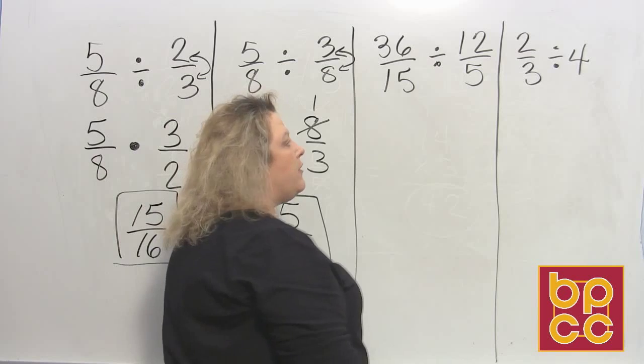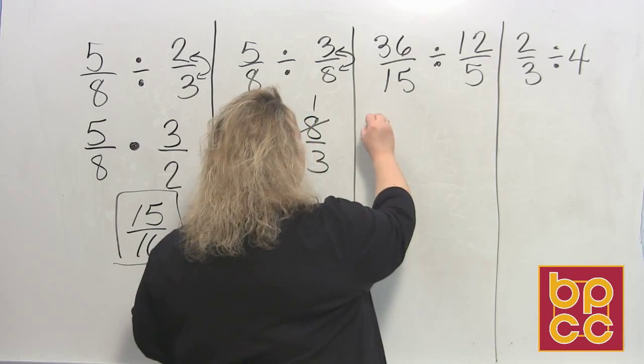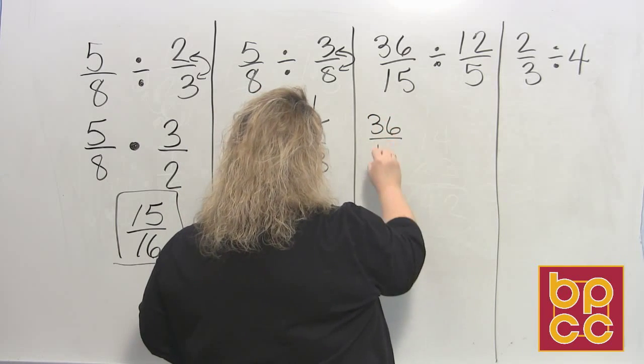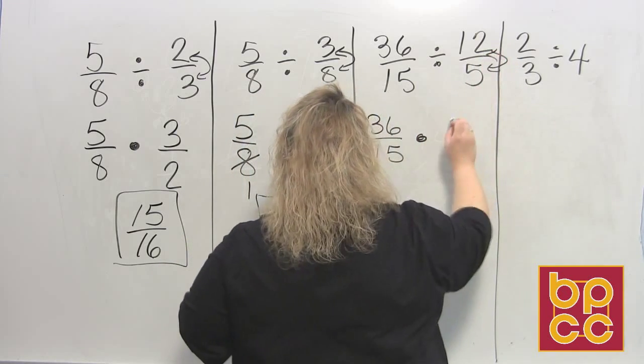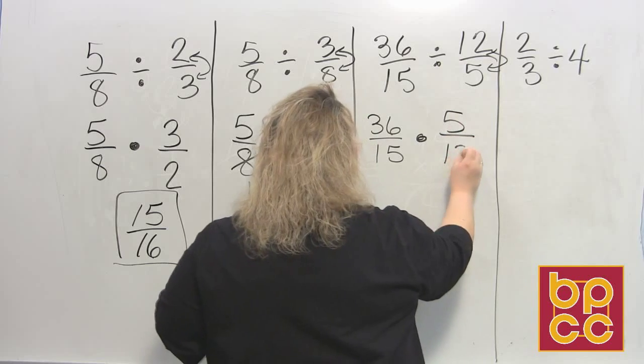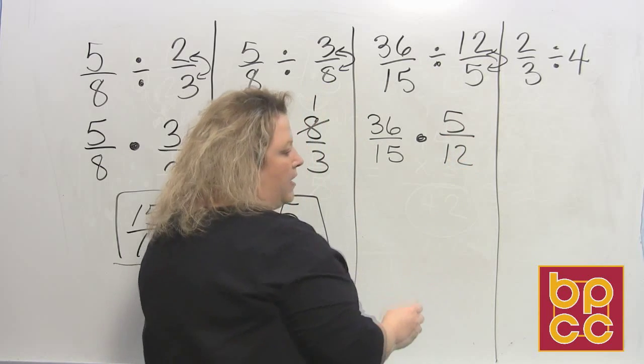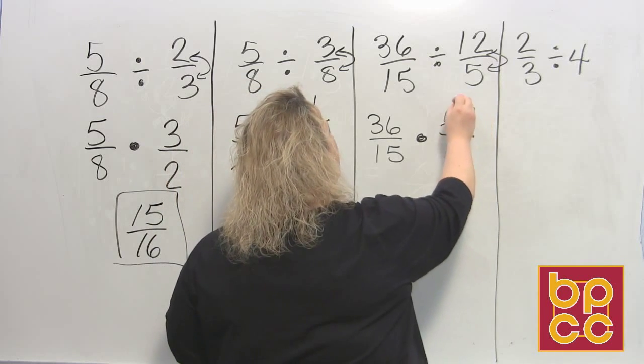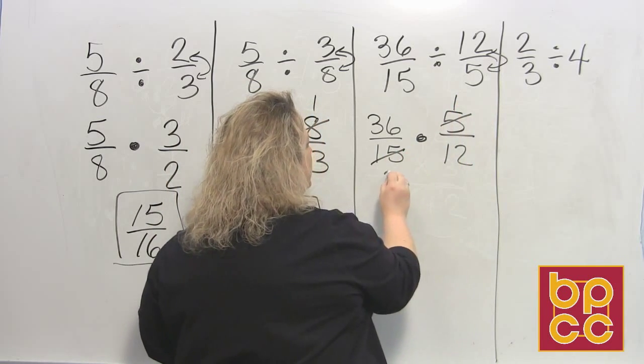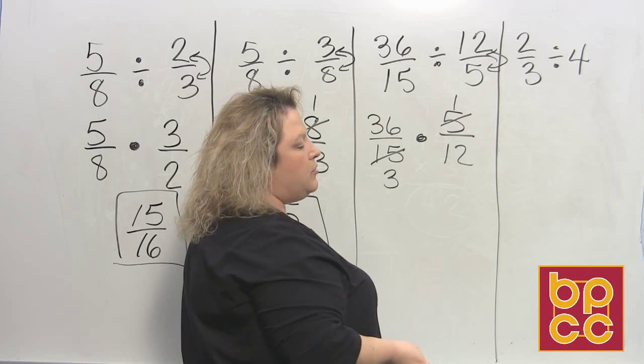All right, let's look at the next one. Thirty-six fifteenths. First fraction stays the same. Flip the second and multiply. So we're going to flip it, which makes 5 over 12. And then we say, okay, do they have anything in common? Well, yeah, the 5 and the 15 do. 5 divides into 5 once. 5 divides into 15 three times.